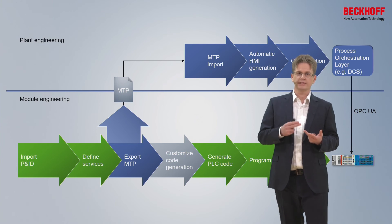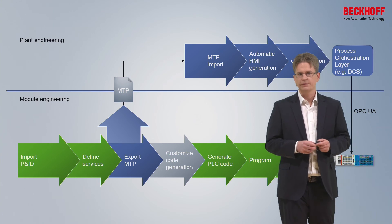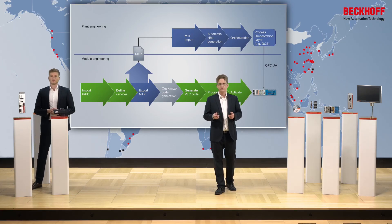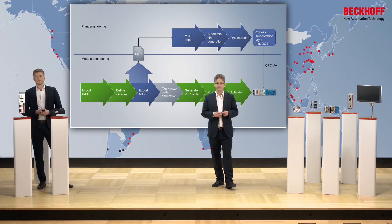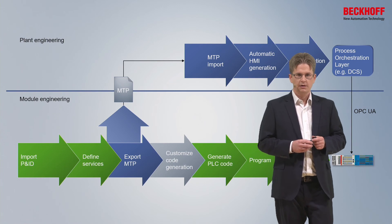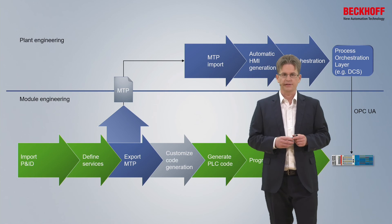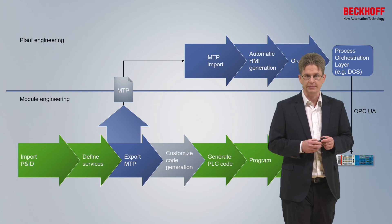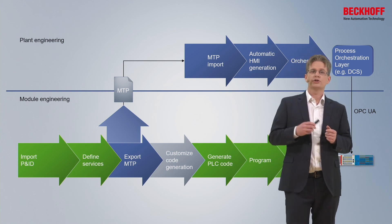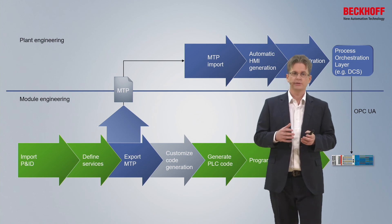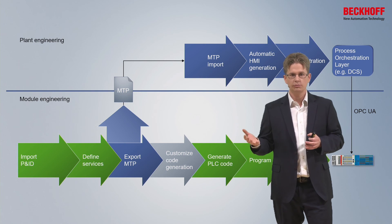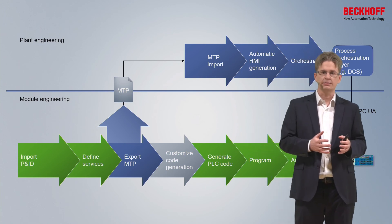As much code as can be generated automatically is generated. The module developer then only implements the pieces within their domain knowledge. This also ensures the module provides the correct OPC UA interface according to the prior exported MTP file. Module developers with different existing libraries can use the TwinCAT XCAD interface — providing own plugins to adjust the code generation and use their own existing libraries within the MTP-enabled modules.